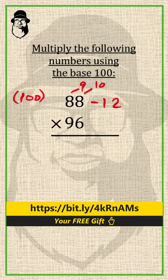Here also, 9 from 9 is 0 and 6 from 10 is 4. So 96 is 4 far from 100.